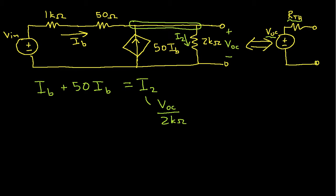We also want to find out what IB is. And the way we can do that is as follows. You'll notice that the voltage across this 1k ohm resistor and this 50 ohm resistor is given by VIN minus VOC. So again, that's the voltage across this series combination of the 1k ohm and the 50 ohm resistor.